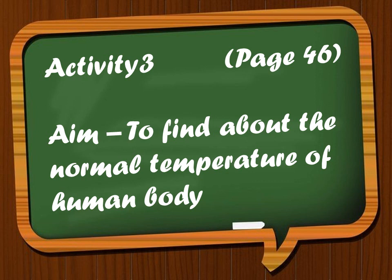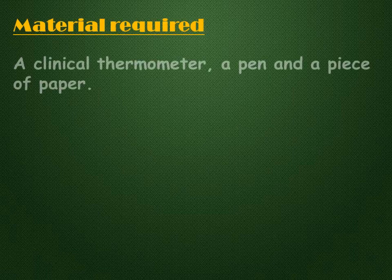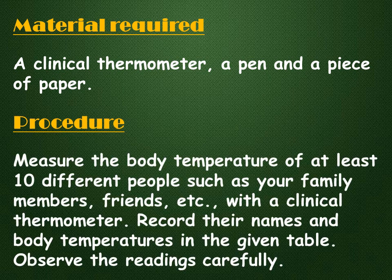Activity 3, page 46 of your textbook: aim to find about the normal temperature of the human body. Material required: for this activity, you will require a clinical thermometer, a pen, and a piece of paper. Procedure: measure the body temperature of at least 10 different people, such as your family members, friends, etc., with a clinical thermometer. Now record their names and body temperatures in the given table. Observe the readings carefully.